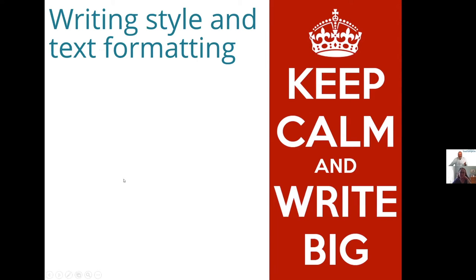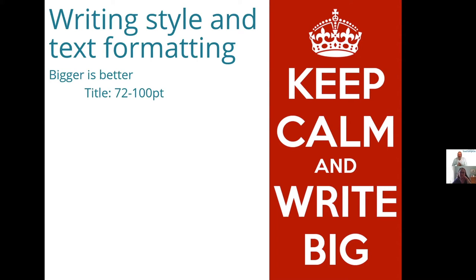The key message in your writing and text is: keep it big. Bigger is in many ways better — you need to make sure things can be seen and read. Titles should be something like 72 to 100 point. That's broad guidance, but it really does need to be big and bold. You're normally writing in 10, 11, or 12 point, so that's a lot bigger, but it really does need to be. Think about signs as you drive along a road — if someone's writing too small, you just can't read it. So you do need to make sure things are big.